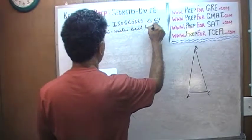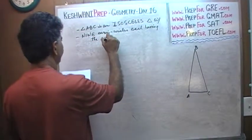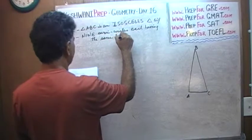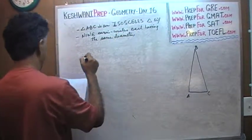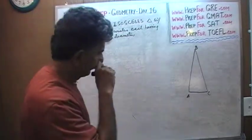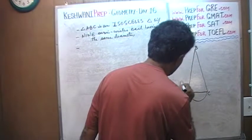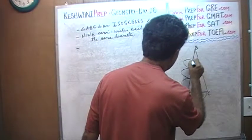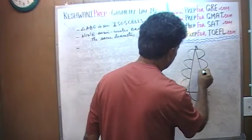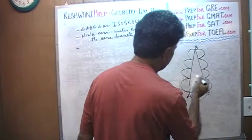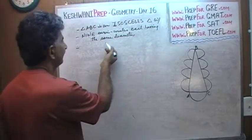We are also told that there are 9 semicircles. I have to draw 9 semicircles here. We have 1 right here. We are going to have 4 more: 1, 2, 3, 4. Even though they do not look equal, they are equal. 1, 2, 3, and 4. There are your 9 semicircles. They are all of the same diameter.